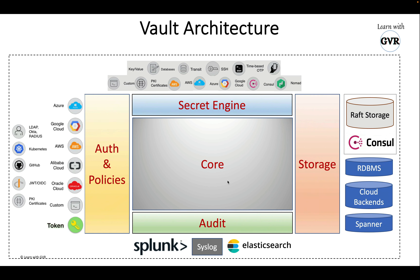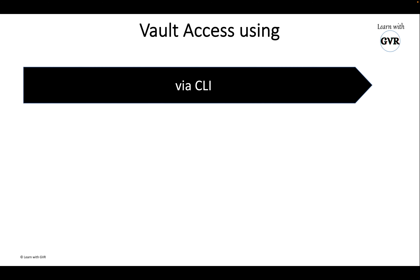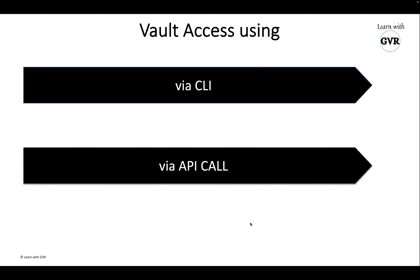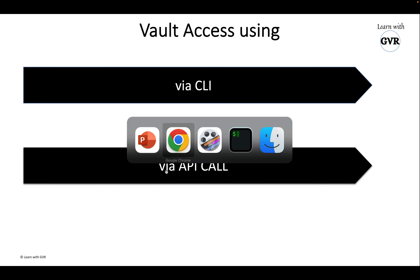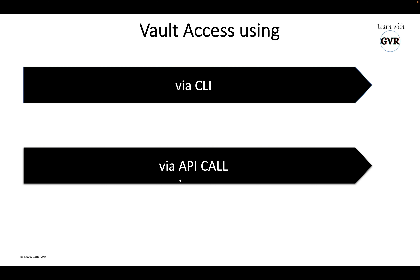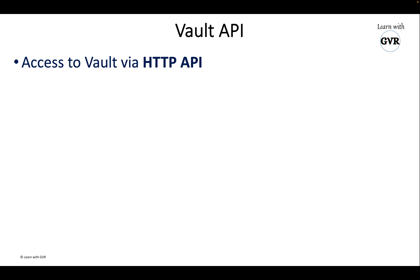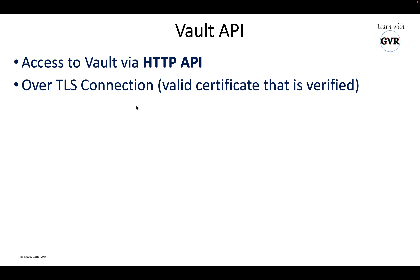Let's understand the basic Vault architecture. There is a core engine which handles storage, secrets, authentication, policies, and audit. Vault can be accessed using the CLI — for example, 'vault auth list' or 'vault operator init' — and there is another way: using API calls. Today's topic is to understand those API calls and be aware of the Vault API. Vault API means we access Vault using HTTP API over a secured TLS connection, so traffic is encrypted and follows HTTPS.